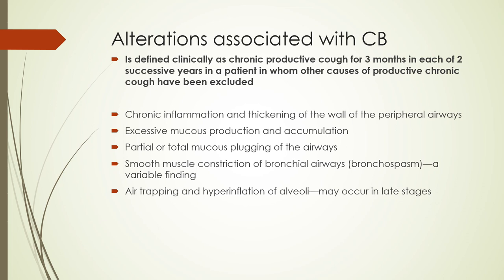Chronic bronchitis is defined as a chronic productive cough for three months in each of two successive years, with other causes excluded - things like lung cancer or reflux. So three consecutive months for two consecutive years with lots of mucus production equals chronic bronchitis.